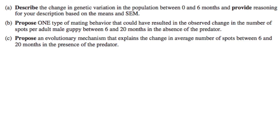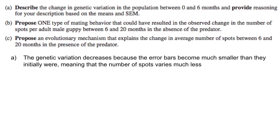Part A: Describe the change in genetic variation between zero and six months. The genetic variation decreases a lot because the error bars are much smaller than before, so the number of spots varies much less.